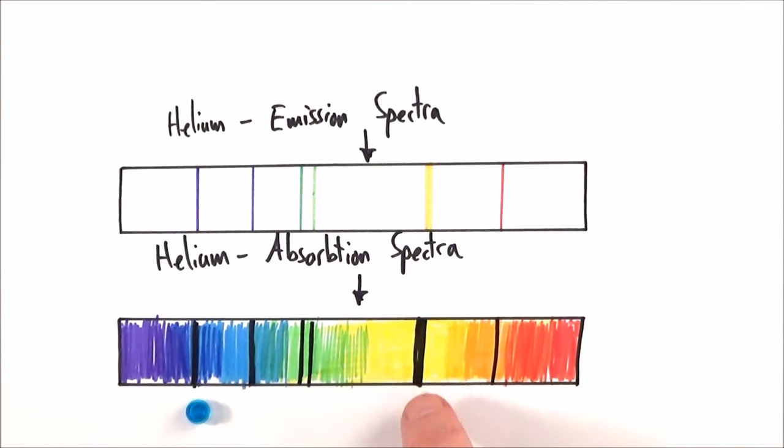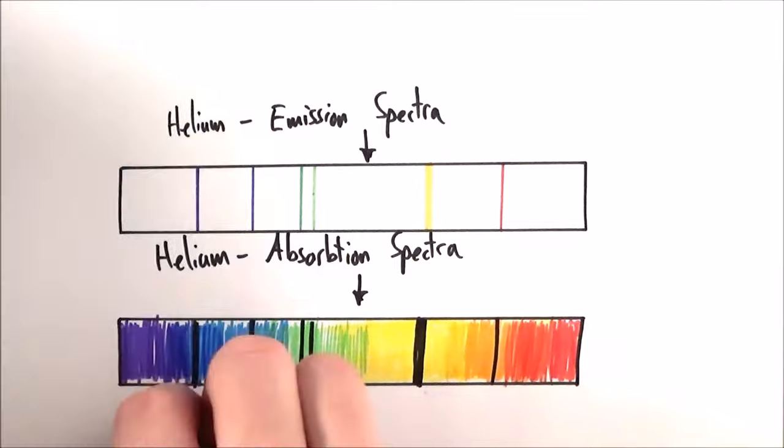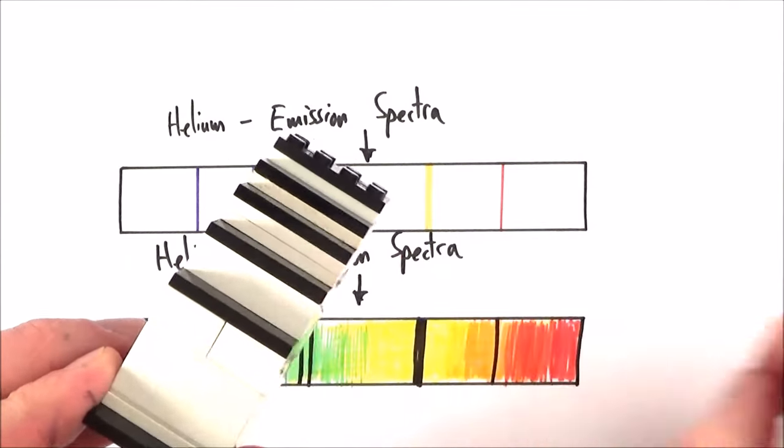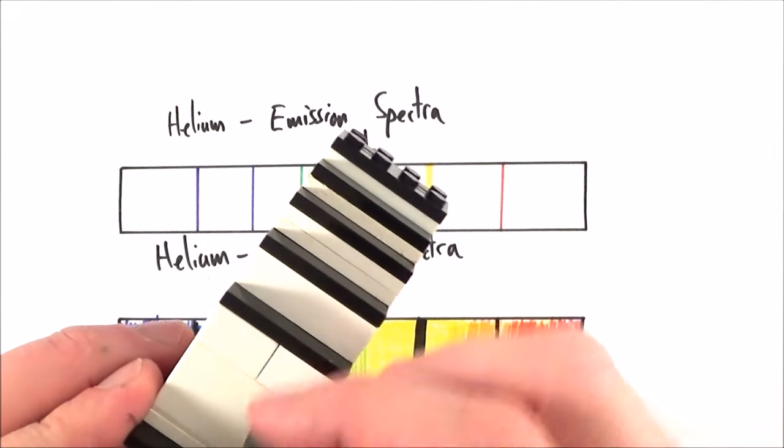We know that helium absorbs certain yellow, red and green frequencies. When it emits stuff it only emits the same things. The frequencies which are absorbed by the electrons to move up the levels are the same as the photons given out when these things drop back down to their ground state.